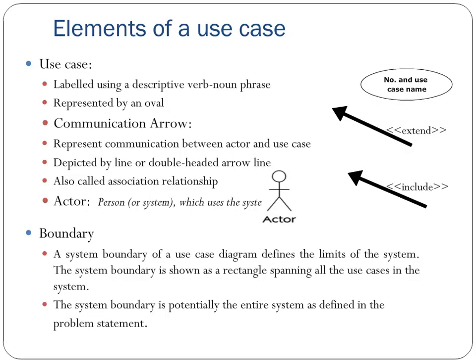Elements of a Use Case: The Use Case element is labeled using a descriptive verb-noun phrase and represented by an oval. The Communication Arrow represents communication between an actor and a use case.